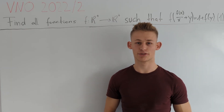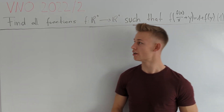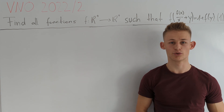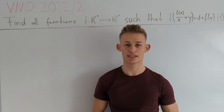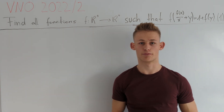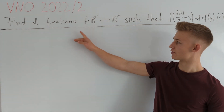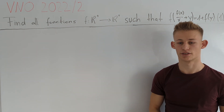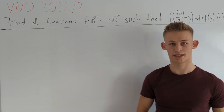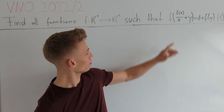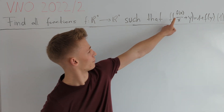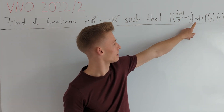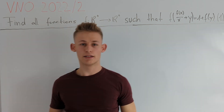Hey guys! Today I want to present a solution for the Vietnam National Olympiad 2022 Problem 2. Let's have a look at the problem statement. We are asked to find all functions from the positive real numbers to the positive real numbers such that the following equation holds: f(f(x)/x + y) = 1 + f(y).